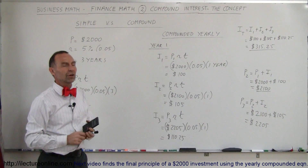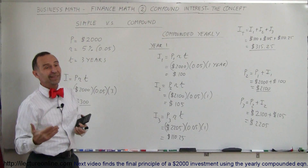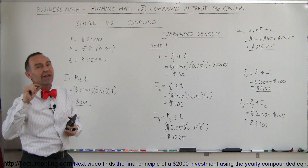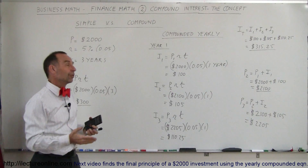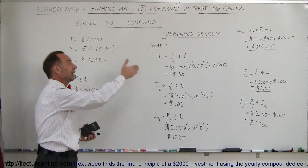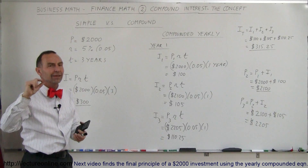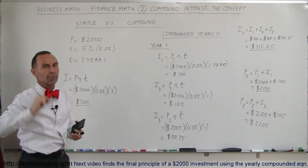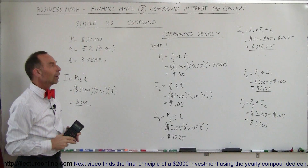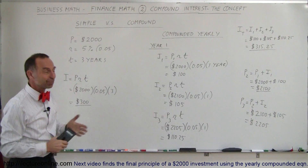You can start compounding hourly, by the minute, or by the second, and you'll see that the extra advantage becomes very, very minuscule. But there's a big difference between simple interest and compounding yearly, and between compounding yearly and monthly. The gains become smaller and smaller as the compounding frequency increases — you'll see how that works in the next videos.